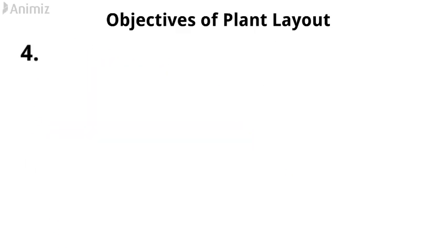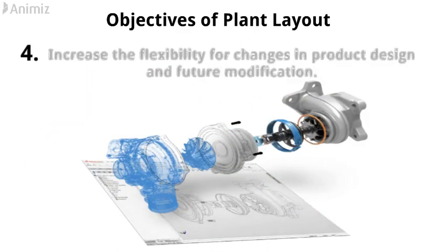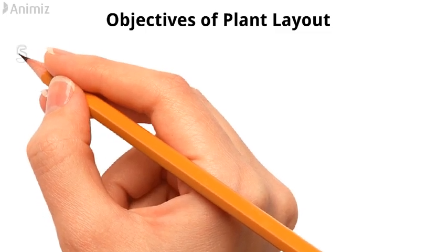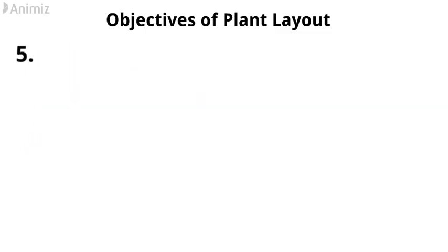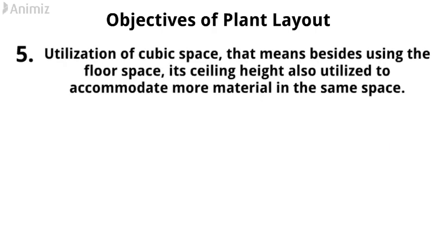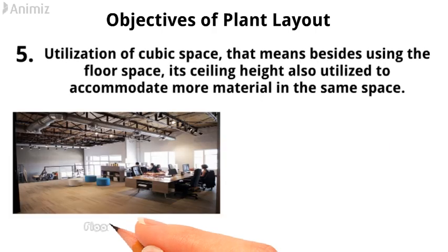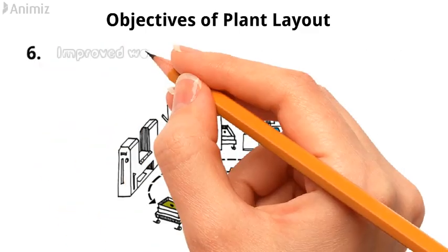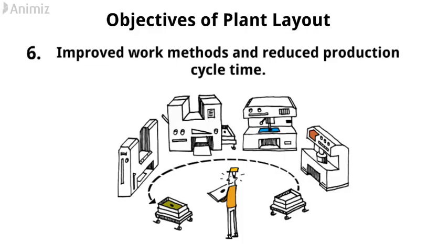4. Increase the flexibility for changes in product design and future modification. 5. Utilization of cubic space — meaning besides using the floor space, the ceiling height is also utilized to accommodate more material in the same space. 6. Improved work methods and reduced production cycle time.